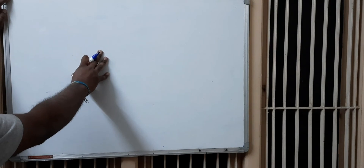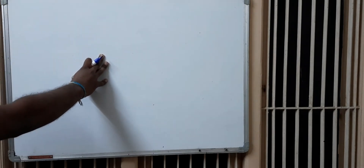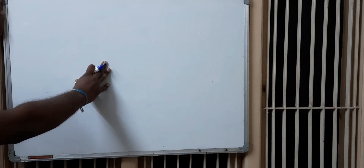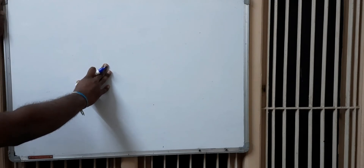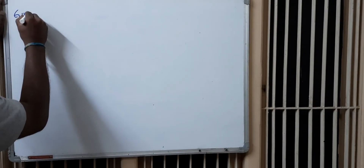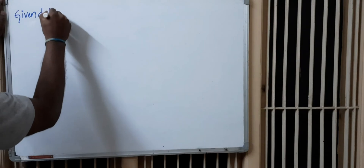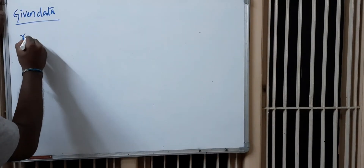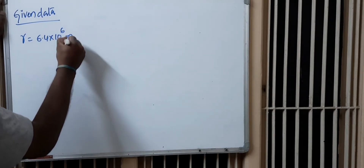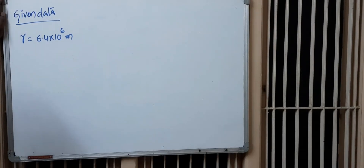Now coming to the next question: the Earth's magnetic field at the equator is approximately 0.4 Gauss. Estimate the Earth's dipole moment, given the radius of the Earth R = 6.4 × 10⁶ meters. Let us write the given data: R = 6.4 × 10⁶ meters.